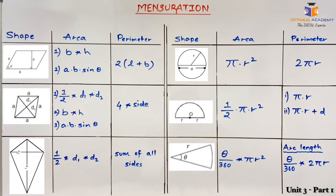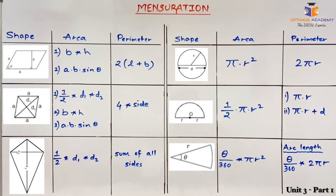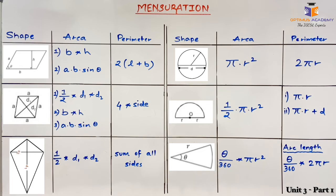The next shape is rhombus. A rhombus is a tilted square — it resembles a square but is tilted. The area of a rhombus is half × product of diagonals, that is D1 × D2. If the diagonals are not given, the area is base × height. Since rhombus is also a parallelogram, we can also use A × B × sin θ. The perimeter of a rhombus is 4 × side, as all four sides are equal.